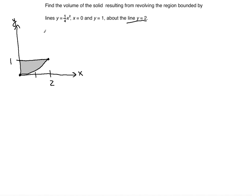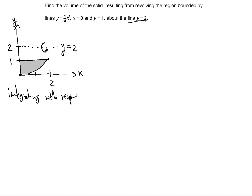The only difference between this example and the last one is that we're going to revolve this region about the line y is equal to 2. This axis of revolution is parallel to the x-axis, which means that we're integrating with respect to x from x equals 0 to x equals 2, because these are the x values that bound this region.